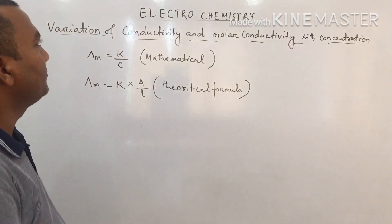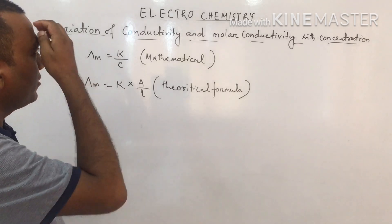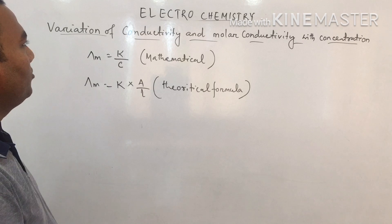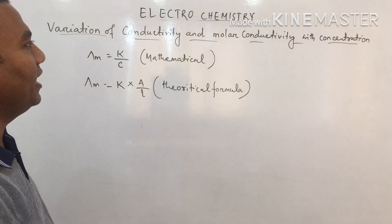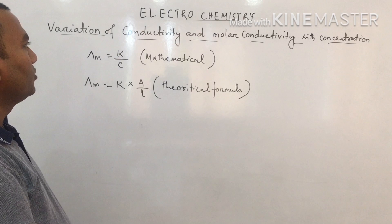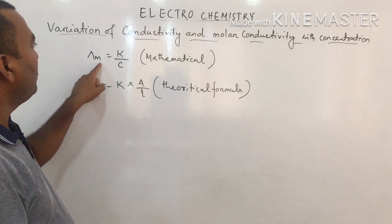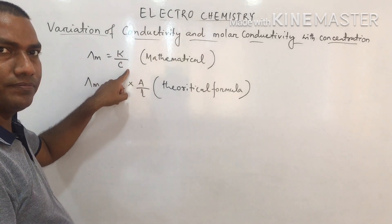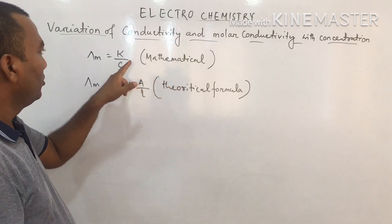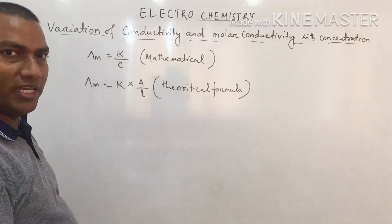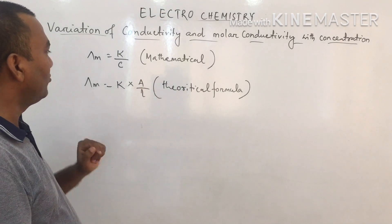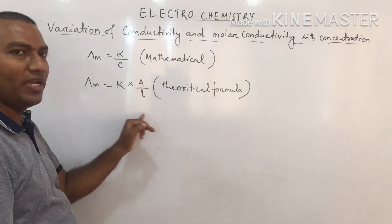Welcome to this class of electrochemistry. We will study the variation of conductivity and molar conductivity with concentration. We know λm = κ / C is the mathematical formula. The theoretical formula is λm = κ × A / l.